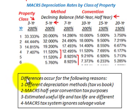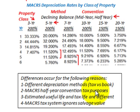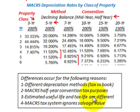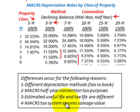The difference occurs for the following reasons: first, different depreciation methods — tax versus book; second, the MACRS half-year convention used for tax purposes; third, the estimated useful life and the tax life are different — book life is 7 years while the IRS-defined tax life is 5 years for the property class; and fourth, the MACRS tax system ignores salvage value, so for tax purposes we depreciate the total amount down to zero.